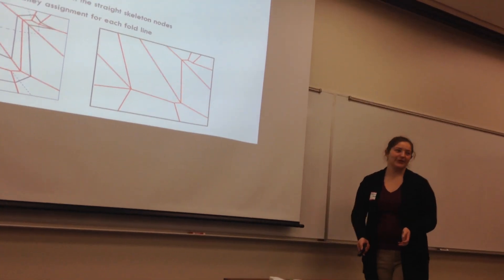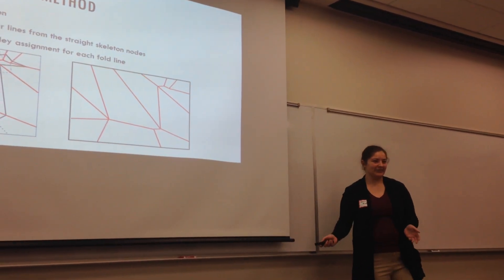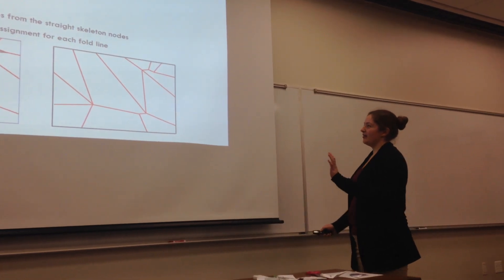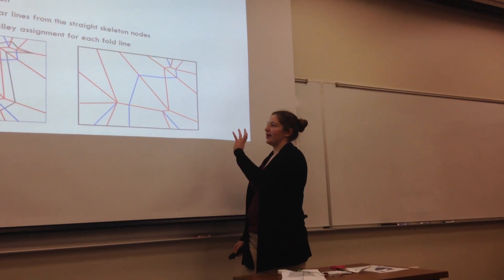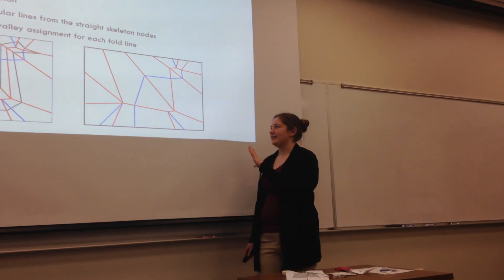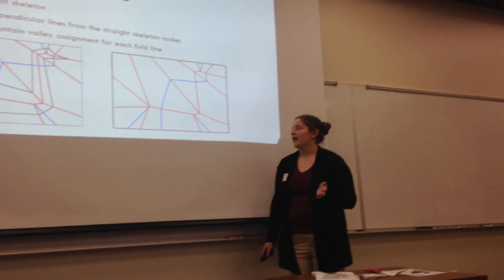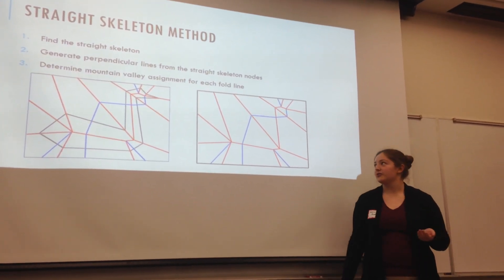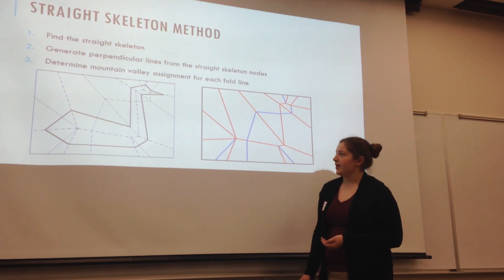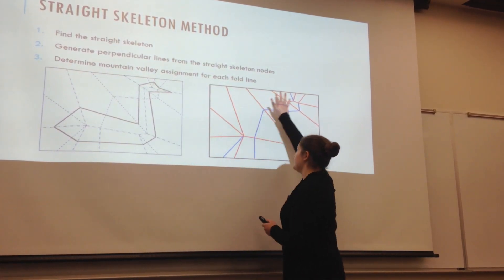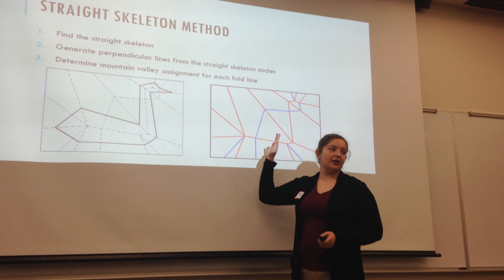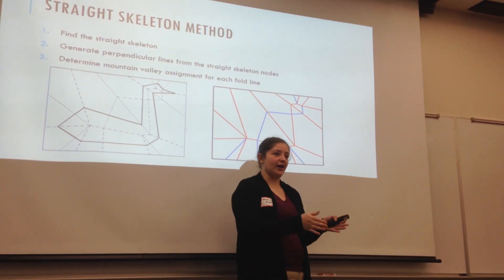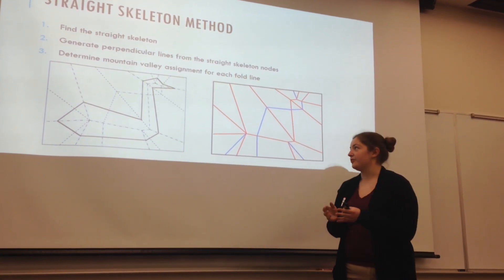Pretty cool. And also, interesting fact — Houdini used this method as one of his magic tricks. After we create the straight skeleton, we need to add a couple more lines to make it flat-foldable so we can make one straight-line cut through. Then the last step is to determine how we're going to fold those lines — whether as a mountain fold or a valley fold.